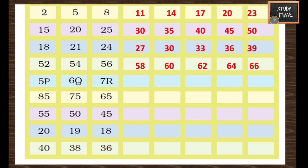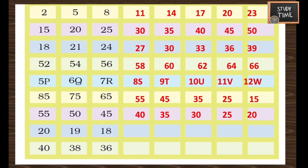Next: 5P — observe the pattern. They have increased the number and written the next alphabet. So: 6Q, 7R, 8S, 9T, 10U, 11V, 12W. Next: 85, 75, 65, 55, 45, 35, 25, 15 — they have made a pattern with decreasing numbers. Similarly, the decreasing pattern: 55, 50, 45, 40, 35, 30, 25, 20.